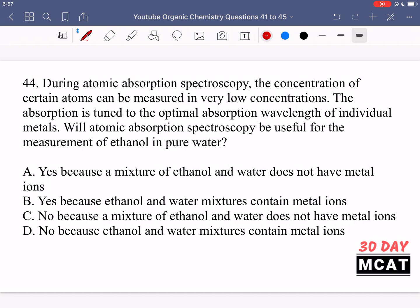In question 44, it says during atomic absorption spectroscopy, the concentration of certain atoms can be measured in very low concentrations. The absorption is tuned to the optimal absorption wavelength of individual metals. Will atomic absorption spectroscopy be useful for the measurement of ethanol in pure water? Ethanol is two carbons, an OH group, and hydrogens. Water is H2O.